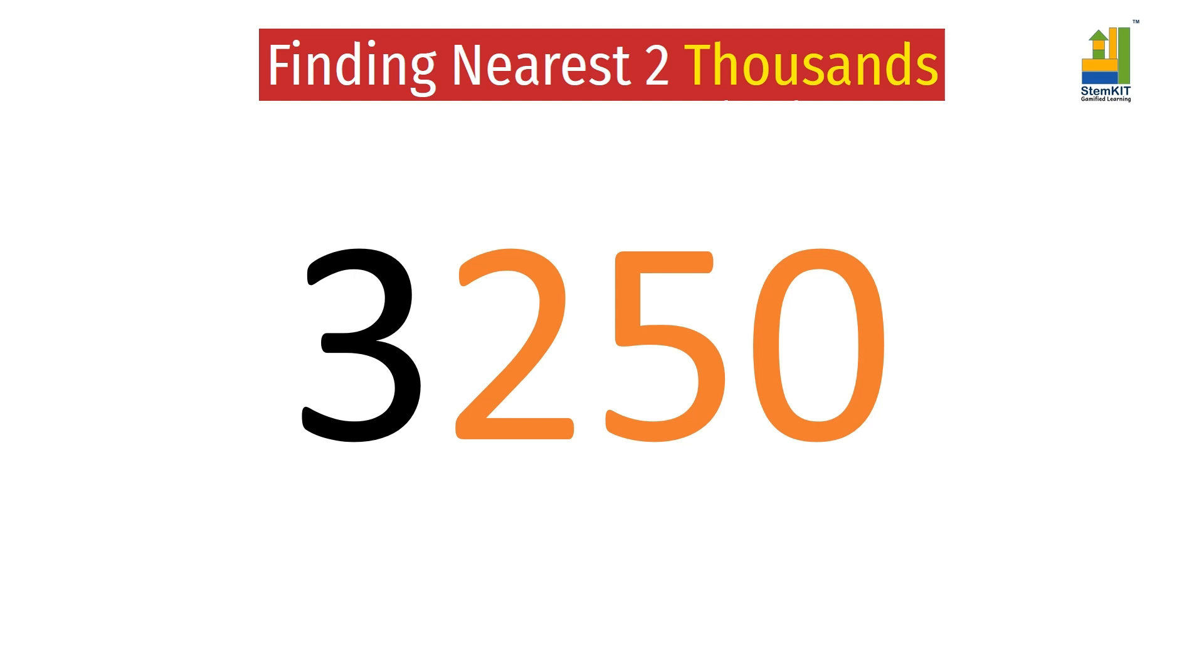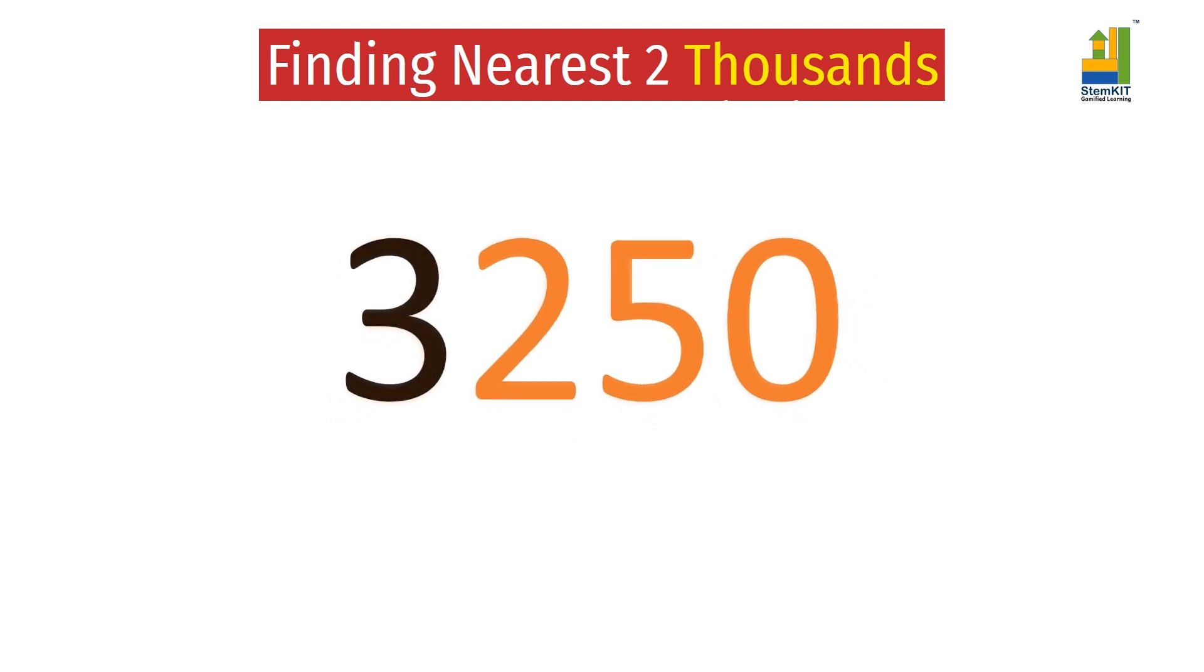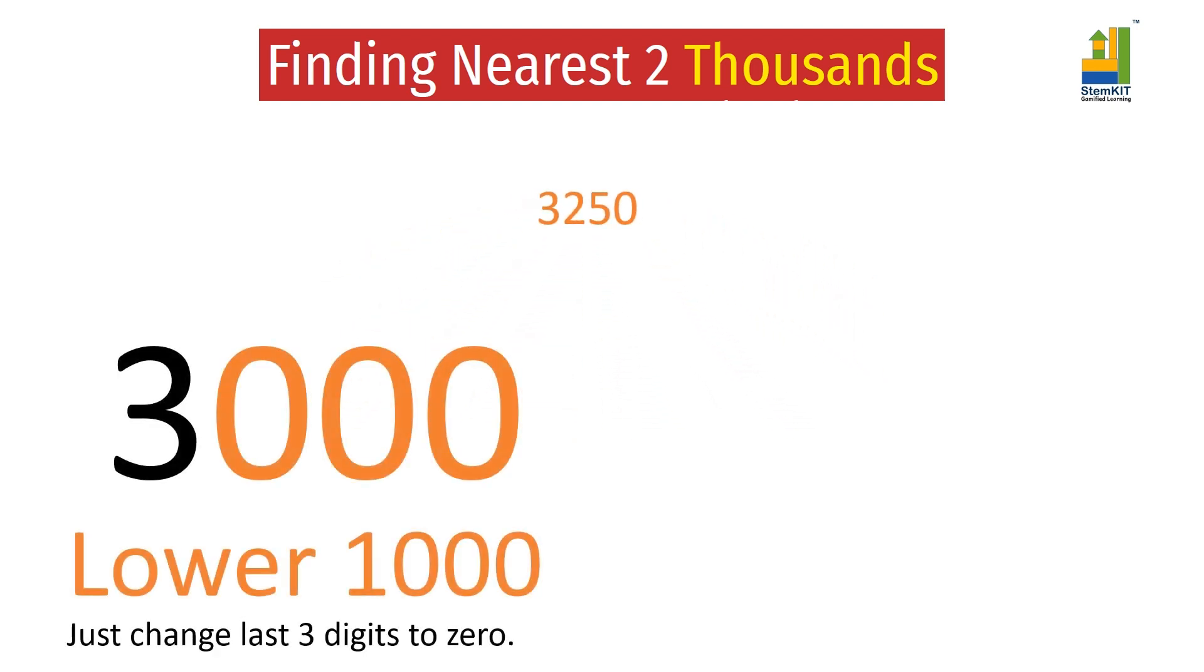The lower thousand is three thousand. Now, to get upper thousand, add a thousand to the lower thousand and we get four thousand.